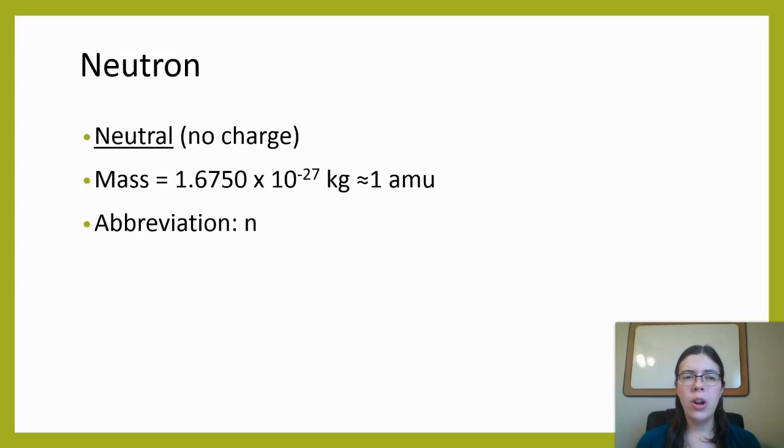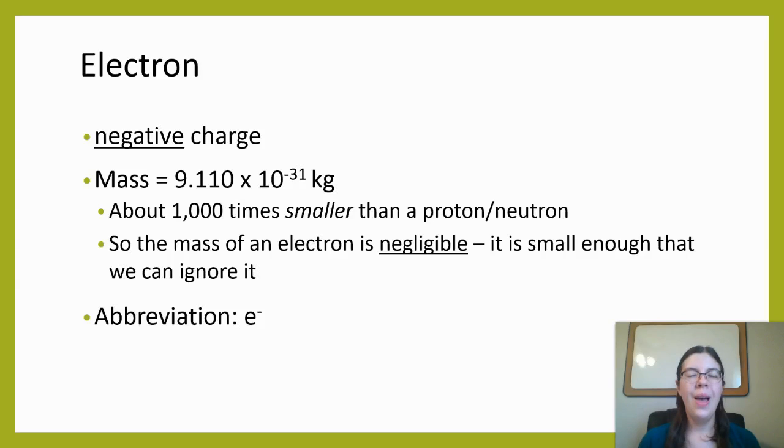Now the mass of a neutron is really similar to the mass of a proton. Again, it's that 1.67 times 10 to the negative 27 which we're not going to worry about in kilograms. We're going to say it's about 1 amu, and the abbreviation for neutron is just the letter N. Okay, so finally we have the electron.